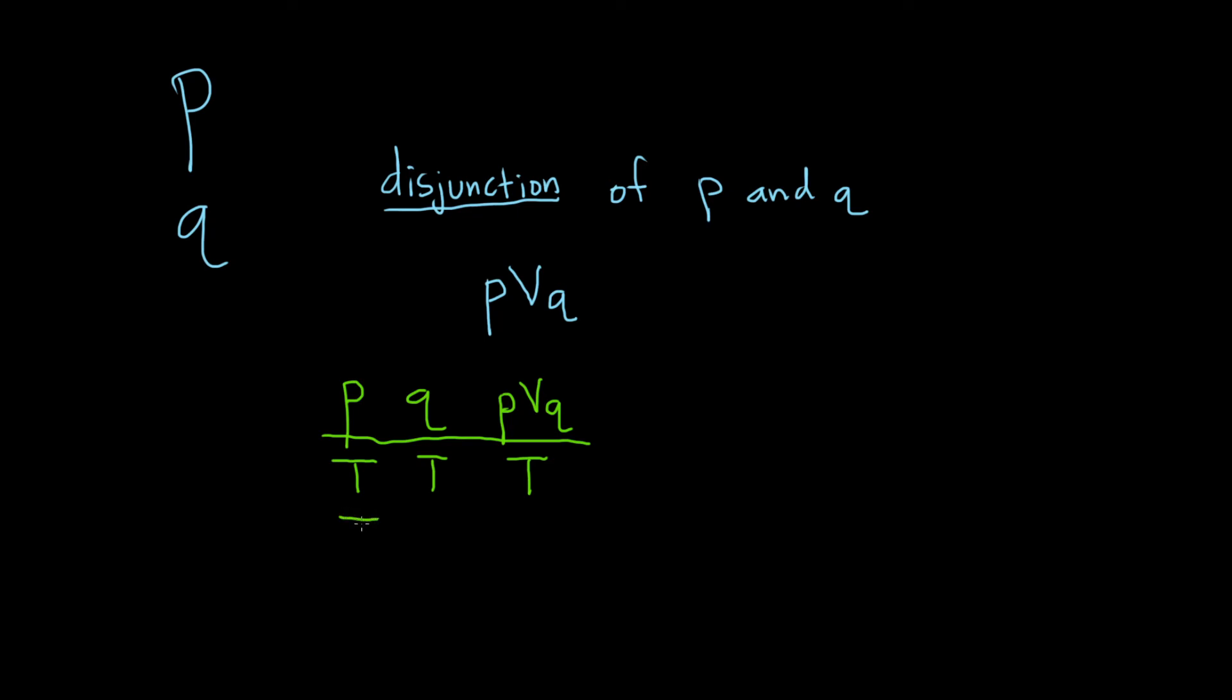What about the case when p is true and q is false? Well, same thing. p is true. So that satisfies the condition that at least one of these is true. Therefore, p or q is true.